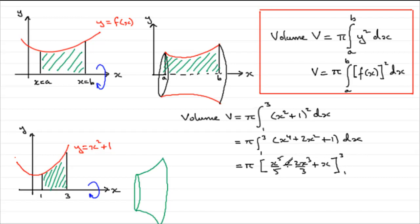Substitute your 3 in first and then subtract what you get when you put the 1 through. So when you put the 3 through, you're going to have 3 to the power 5 over 5 plus 2 times 3 cubed over 3 plus 3. And then minus what you get when you put 1 through. That's going to be 1 fifth plus 2 thirds plus 1.